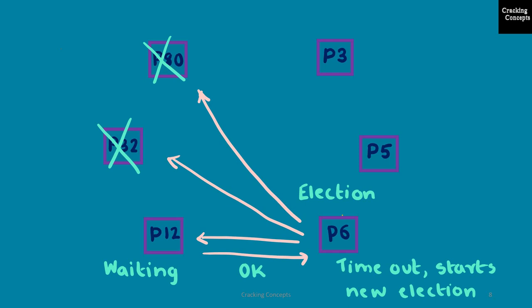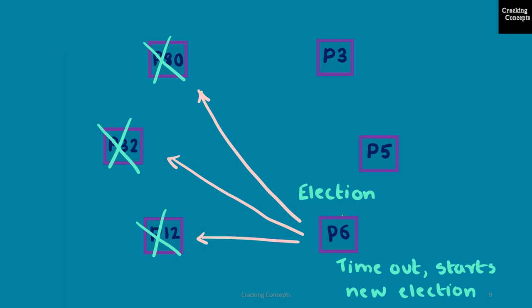We assume that P6 reaches timeout. It calls for an election while P12 is still in the waiting state, sending an election message to all processes with a higher ID. Only P12 replies with an OK message. P6 keeps waiting for messages from P32 and P80, but after some time it times out and calls an election again, sending messages to all three higher ID processes. We then assume P12 has also failed. P6 will repeat sending election messages after each timeout, and this process keeps going. In this scenario, a leader can only be elected when the failures stop.